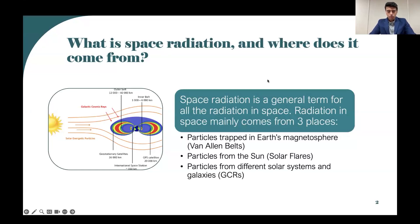What is space radiation and where does it come from? As I was researching, I came across three different types of space radiation. The most common type found in space are GCRs, or galactic cosmic rays. These come from different solar systems and galaxies. Our very own Sun also produces mass amounts of radiation towards Earth — it's usually a constant fluctuation that comes towards Earth. These are known as solar wind.